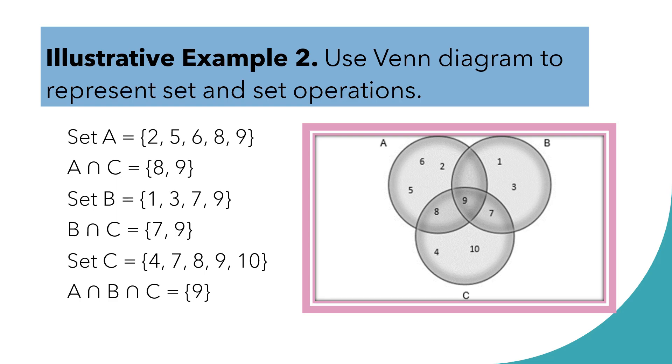Okay? So, if we are going to look for A intersection C, just take a look on the elements of A and C. Their common is 8 and 9. So, A intersection C is 8 and 9. Next, set B. All the elements found in B. So, we have 1, 3, 7, and 9. If we are going to look for B intersection C, take a look on the circle B and circle C.